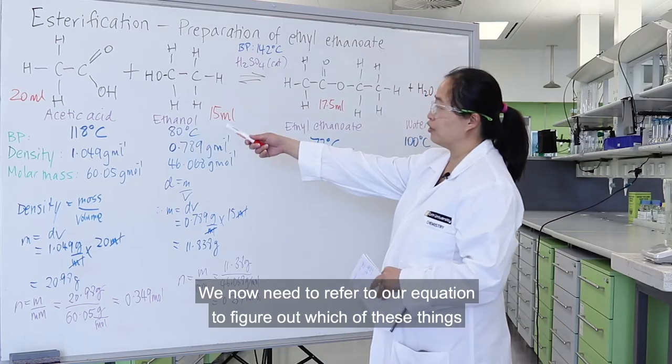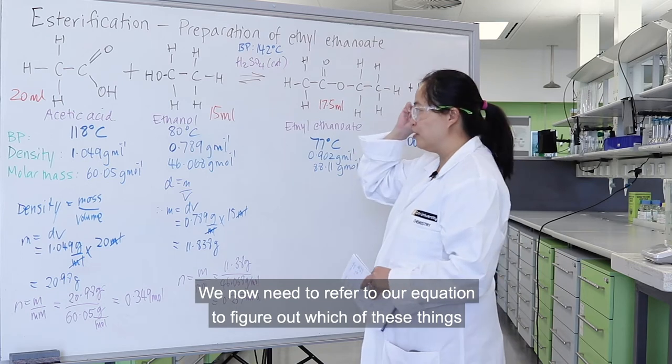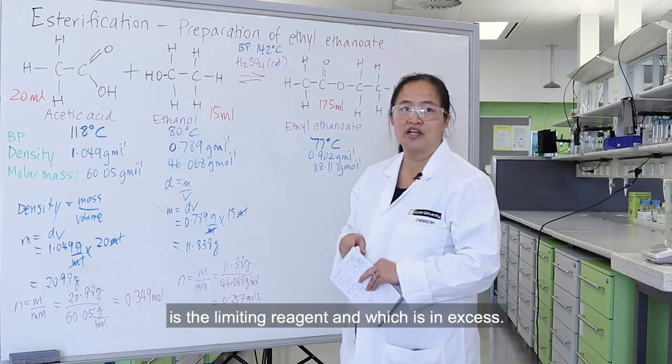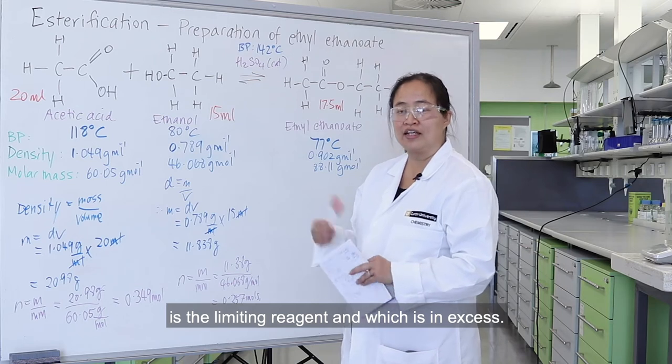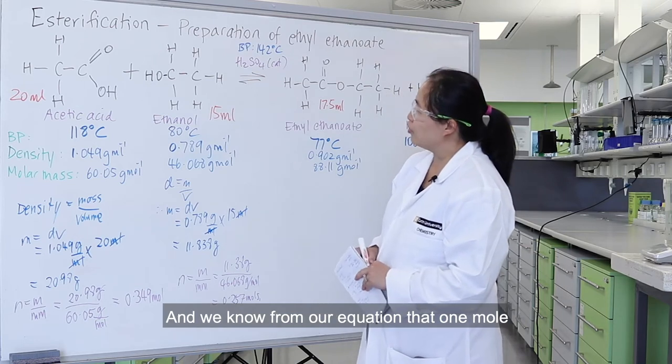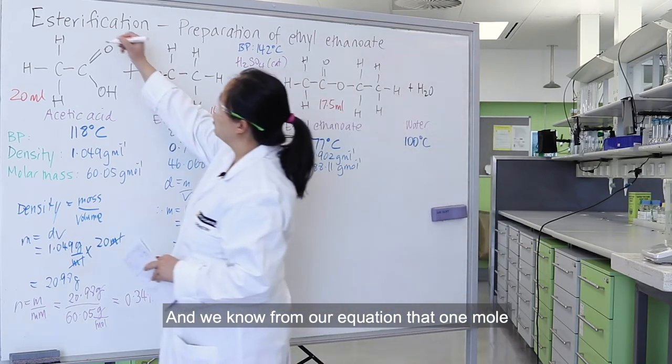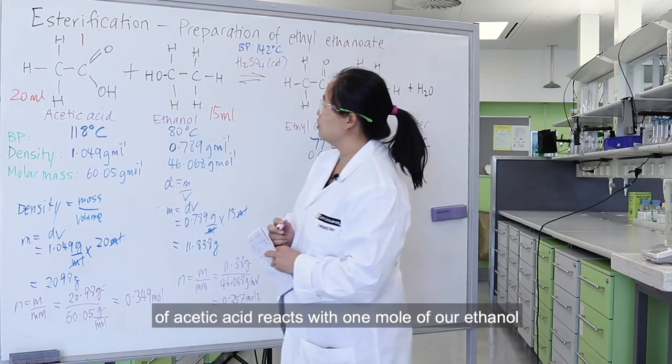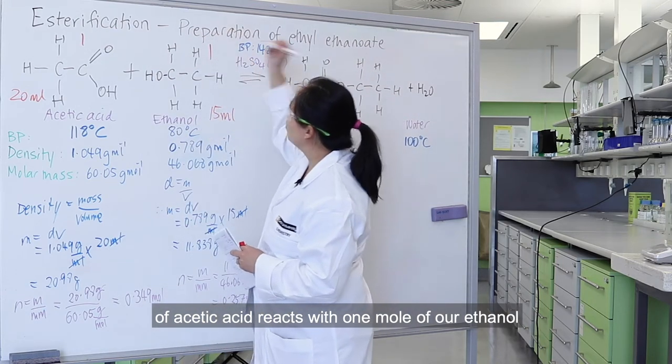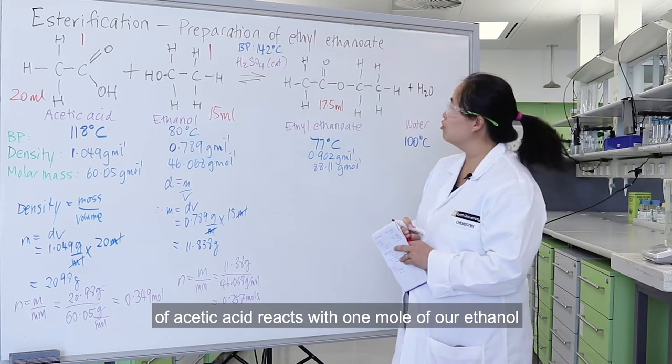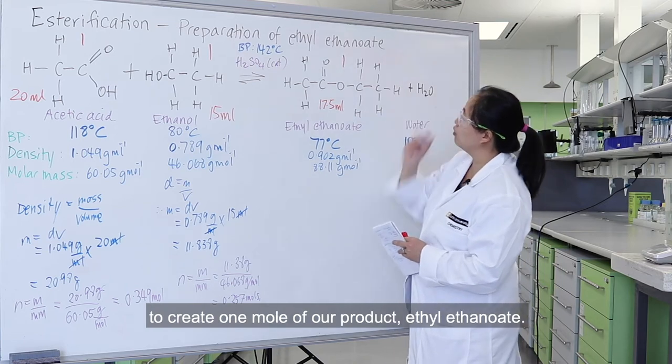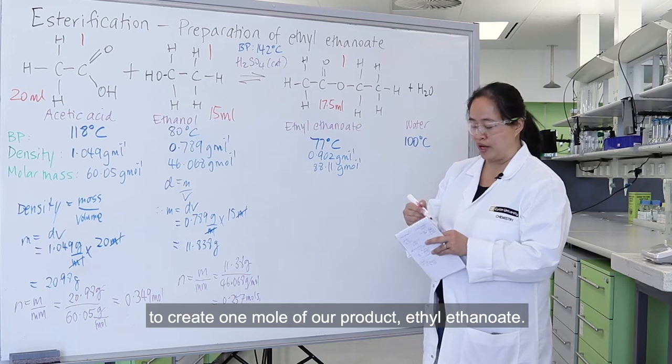We now need to refer to our equation to figure out which of these is the limiting reagent and which is in excess. We know from our equation that one mole of acetic acid reacts with one mole of ethanol to produce one mole of our product, ethyl ethanoate.